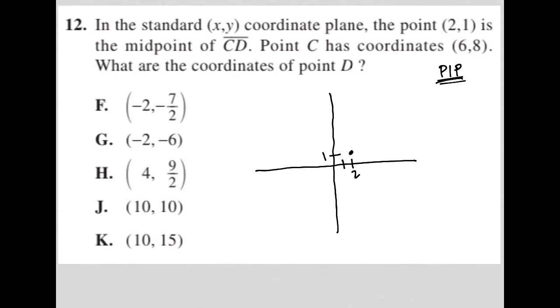So we're told that this point two comma one is the midpoint. So MP equals two comma one. Then we're told point C has coordinate six, eight. So let's find that. So three, four, five, six and two, three, four, five, six, seven, eight. So we are here roughly for point C.